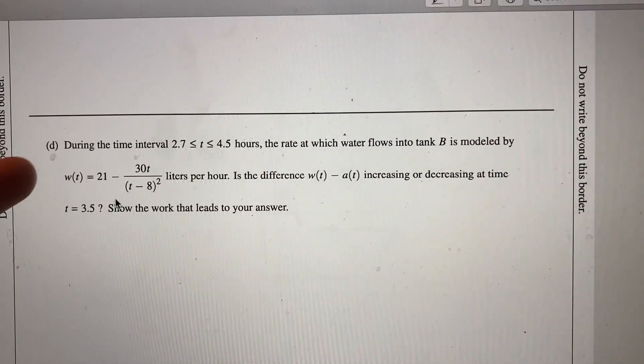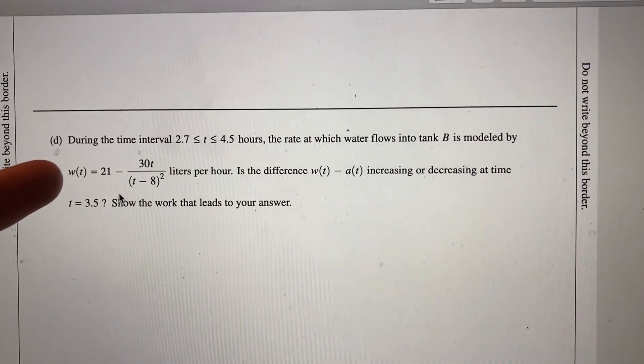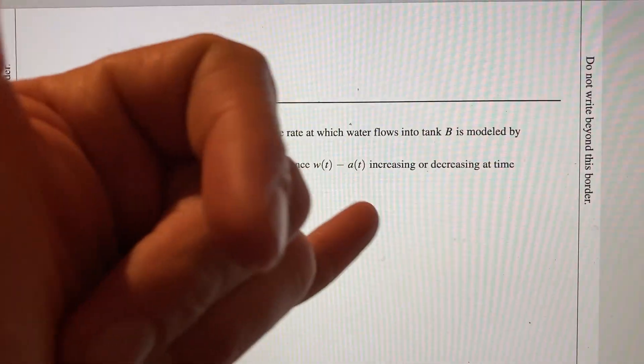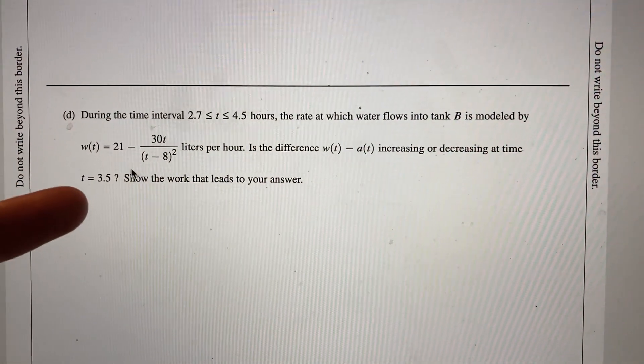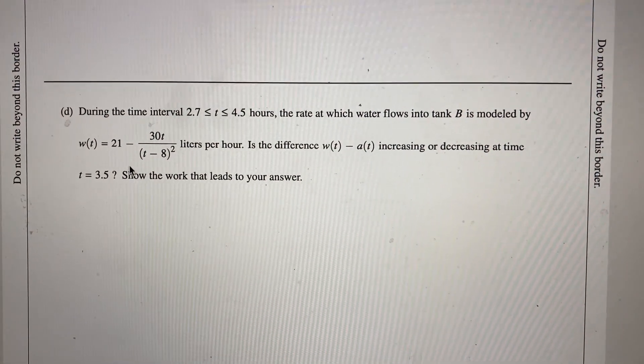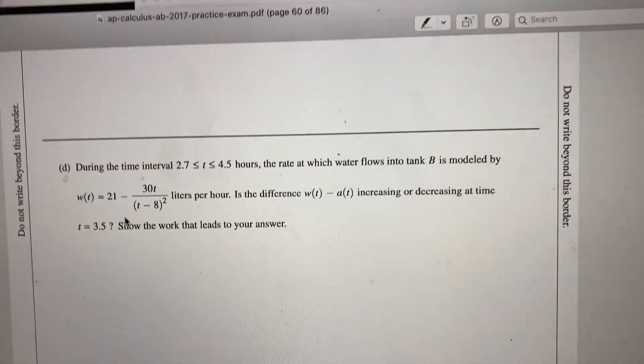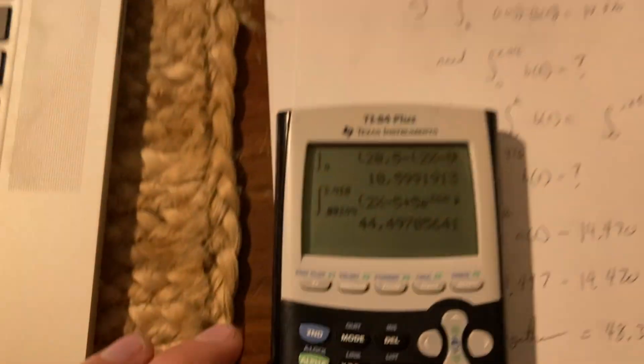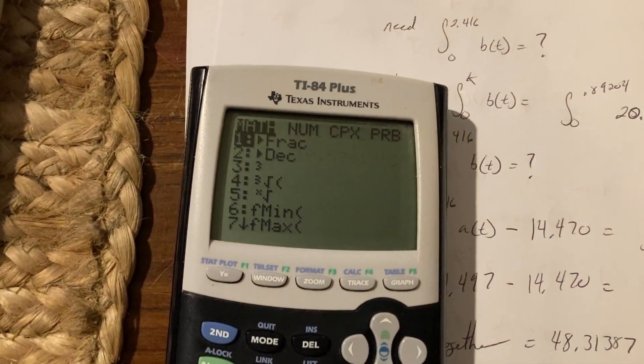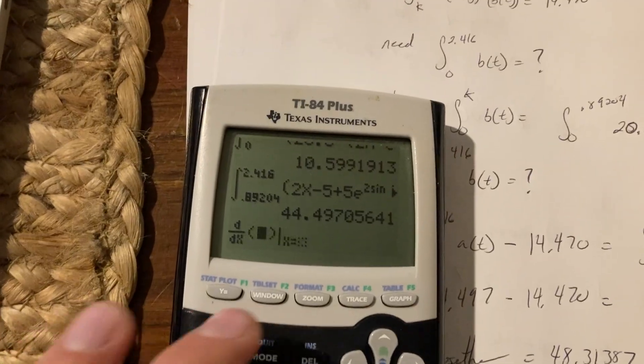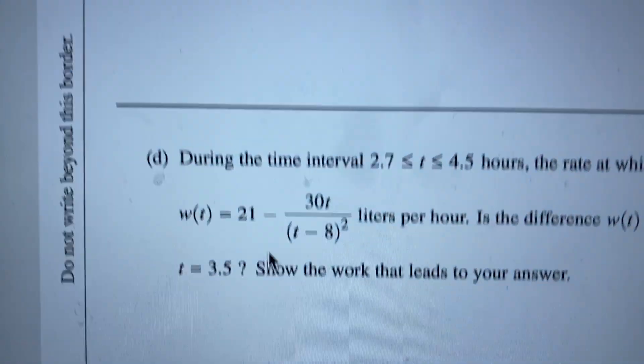Again, this is just taking the derivative. So we got to take the derivative of this fella, take the derivative of the A at 3.5, subtract them. If the answer is positive it's increasing, if it's negative it's decreasing. All right, here we go. So that is Math 8, that's our derivative.